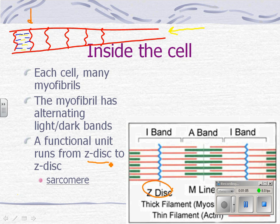Attached to the Z-line are these little fibers — they don't look little here because they're magnified — and they run parallel with the muscle cell. So the muscle cell runs in this direction, and the whole muscle runs in this direction, and these fibers run in that direction also.